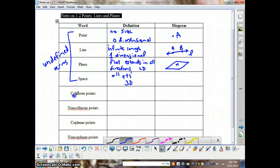Collinear points, if you think about what co means, co means together. And collinear points are points that are on the same line. So we might draw something like this. And these points, all three of these points are on the same line.